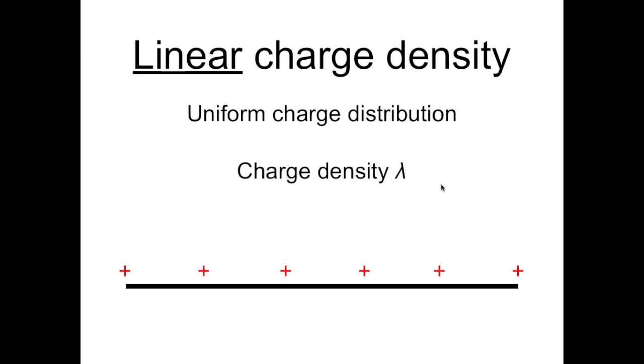The linear charge density has a value, and the Greek letter lambda is typically used to represent it. So lambda, the linear charge density, describes how much charge is present along a given length of line. Its units are charge per length, which is coulombs per meter.